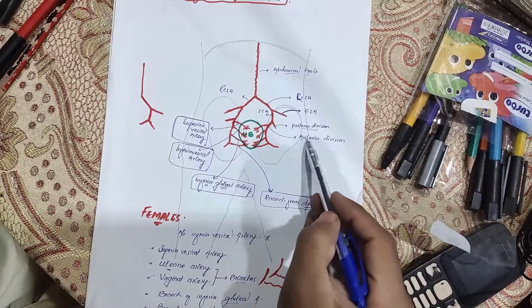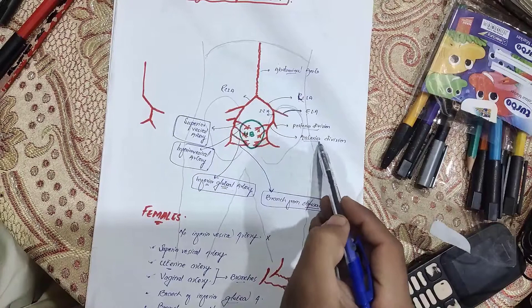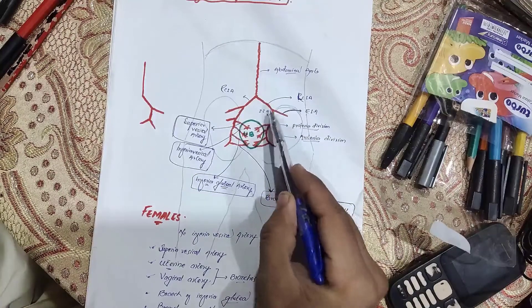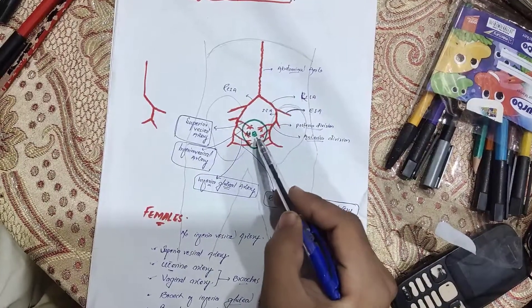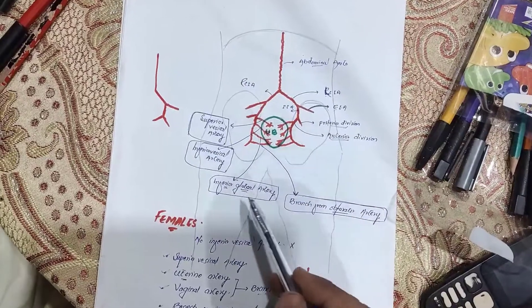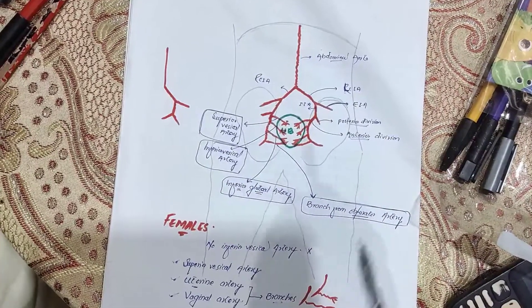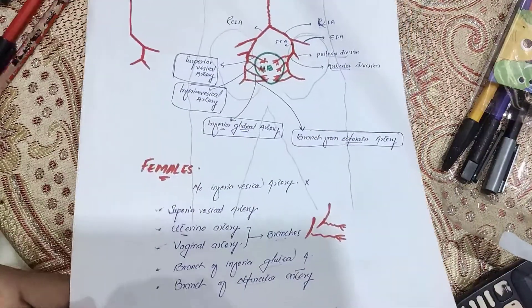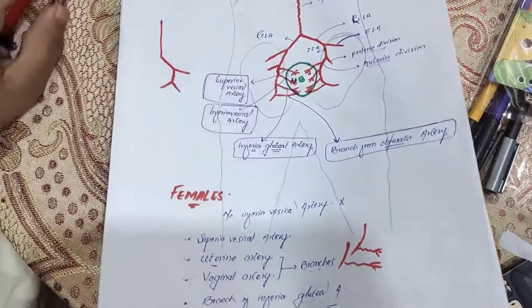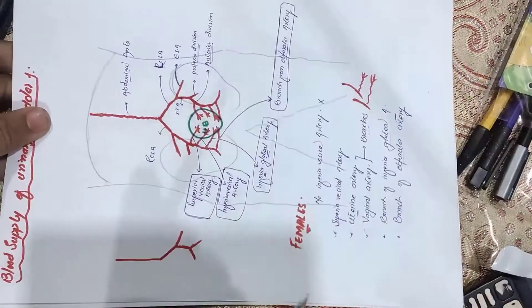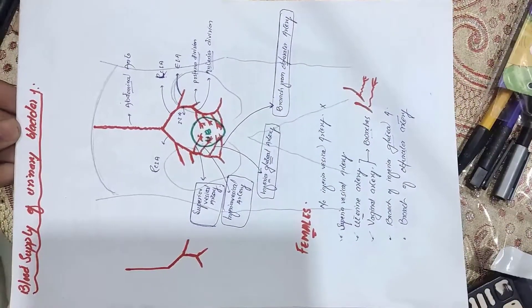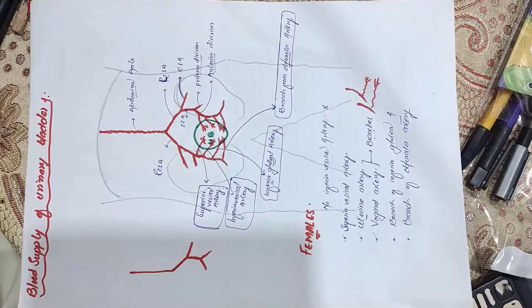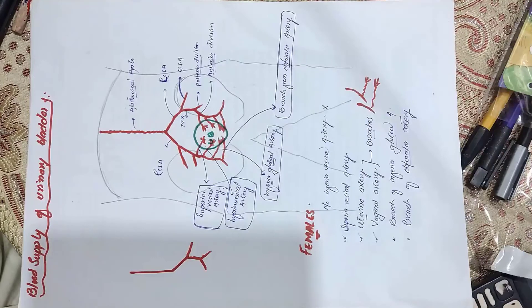Generally, the urinary bladder is supplied by the anterior division of the internal iliac artery, and from there the branches are the superior vesical, inferior vesical, inferior gluteal, and branch of obturator artery — they are responsible to supply blood to the urinary bladder. You can take an image of it for your notes. The next lecture will be about the venous drainage of the urinary bladder. See you then — Allah Hafiz.